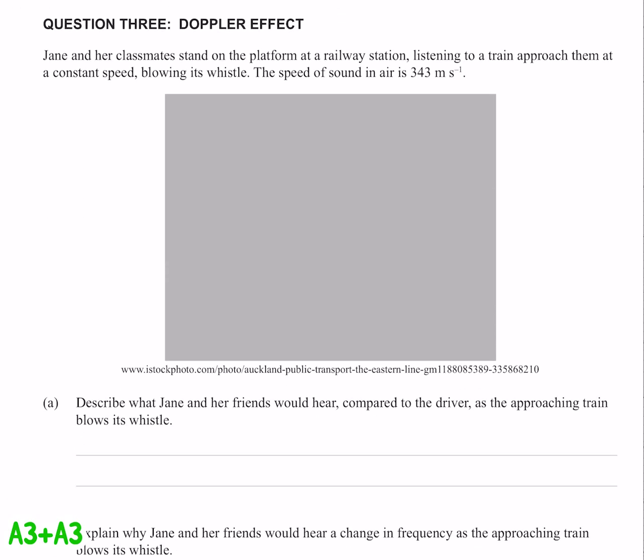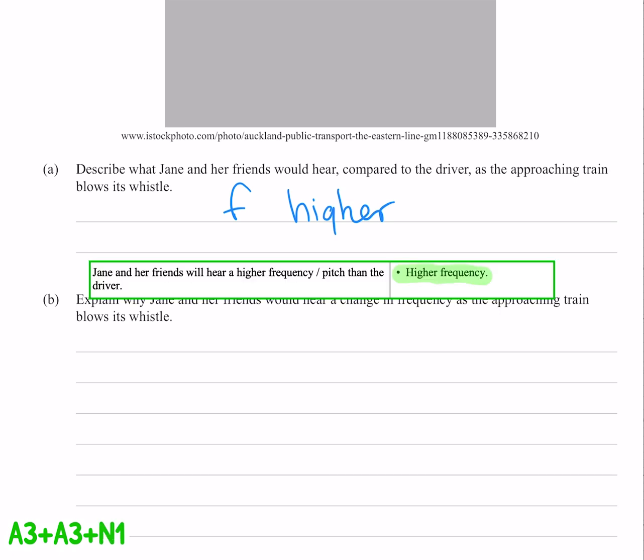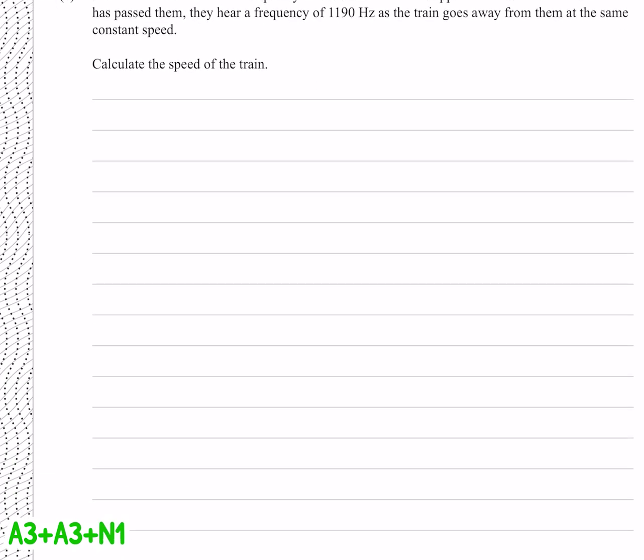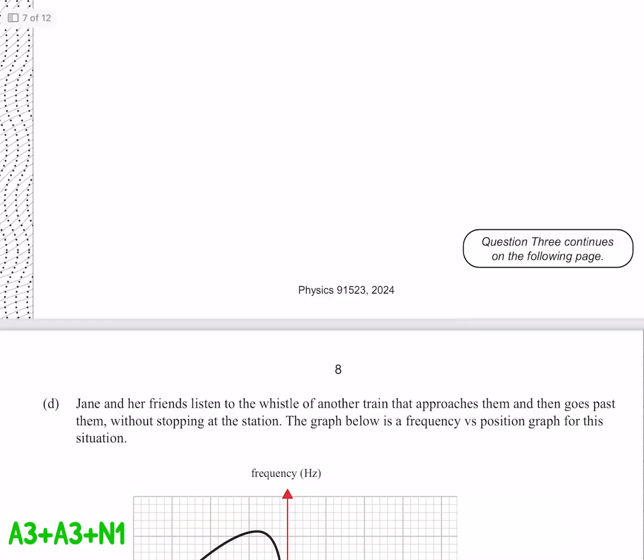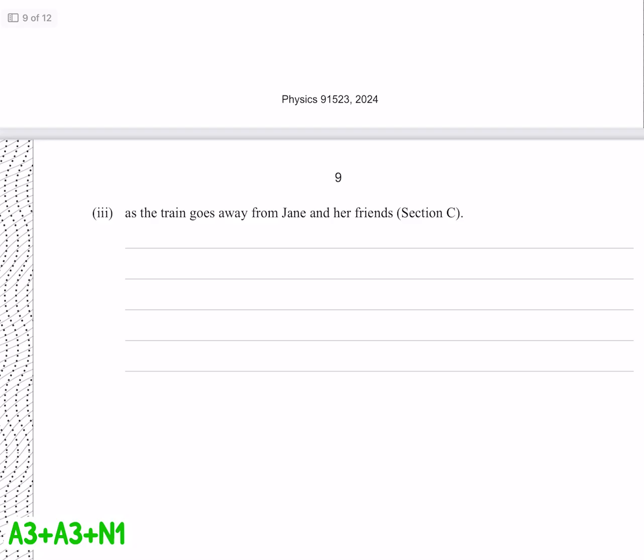Question 3 is all about the doppler effect, something something train. Describe what Jane and her friends would hear compared to the driver as the approaching train blows its whistle. Or the F is going to be higher. Calculate the speed of the train, no thank you. And all of this just looks like way too much hard work. So let's move on to mechanics.